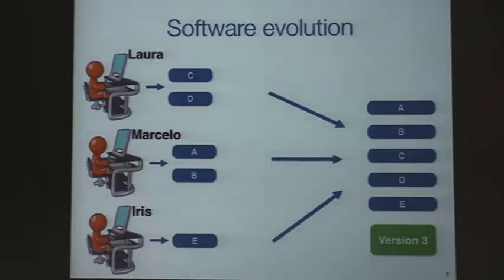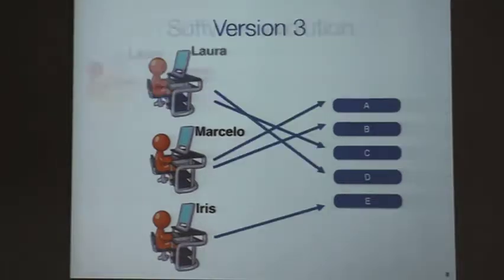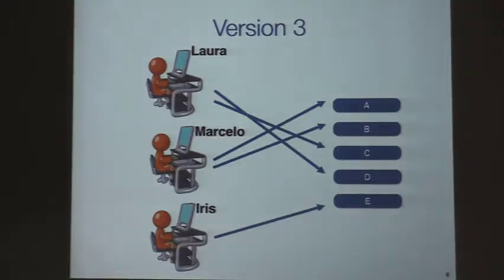Going back to the previous slide: we have practically a group of developers changing a group of classes at a specific time. One way to see this is that at a specific time — in this case version 3 — this group of developers modified this group of classes, but this graphic means something more.